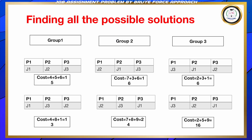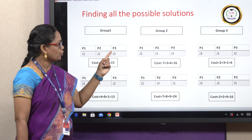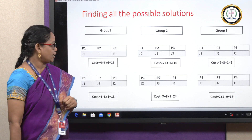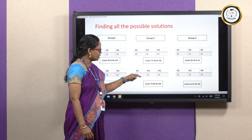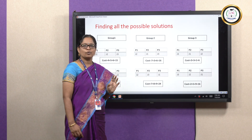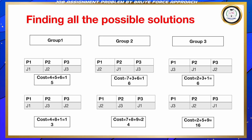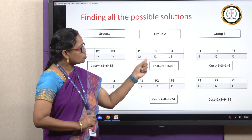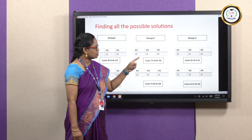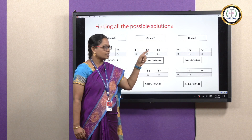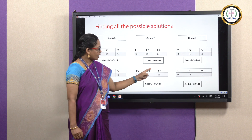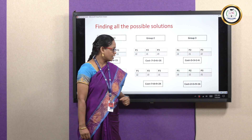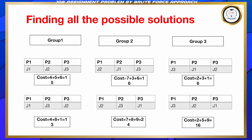In group 2, job 2 is fixed to person 1, and the other two jobs are changed. J1 is assigned to P2 and J3 is assigned to P3 in the first assignment. In the next assignment, J3 is assigned to P2 and J1 is assigned to P3. In group 3, J3 is fixed to person 1. In both cases of group 3, J3 is fixed to person 1 and the other two jobs are assigned to different persons. That is, J1 is assigned to P2 and J2 to P3 in the first assignment, and J2 is assigned to P2 and J1 is assigned to P3 in the second.